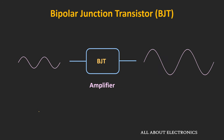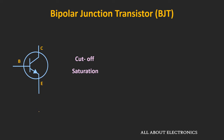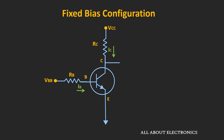In the previous videos of the BJT, we had seen that by biasing the BJT in the active region, it is possible to use it as an amplifier. But the BJT can also be used as a switch. And whenever it is used as a switch, it is operated in the cutoff and the saturation region. We will understand the working of the BJT as a switch using the fixed bias or the base bias configuration.